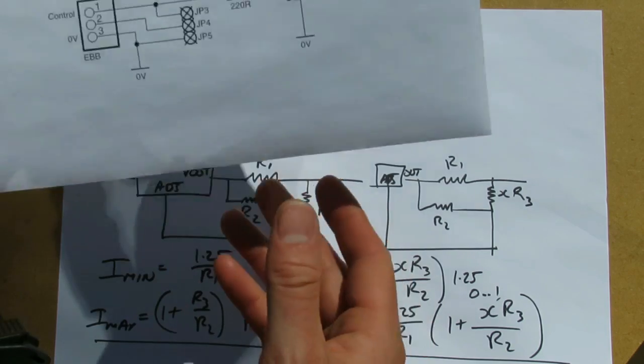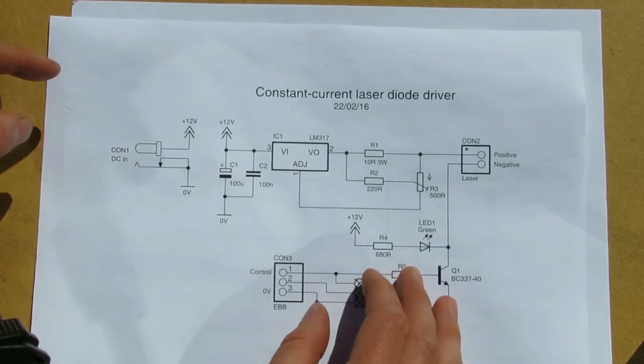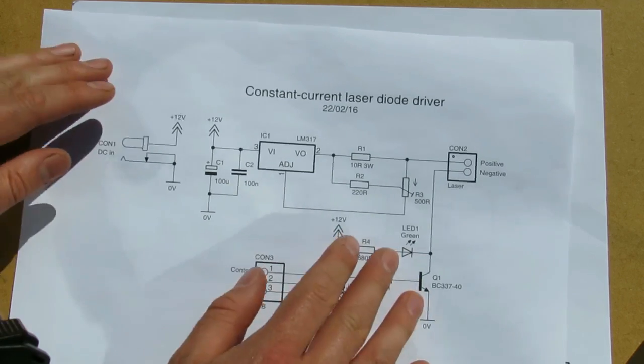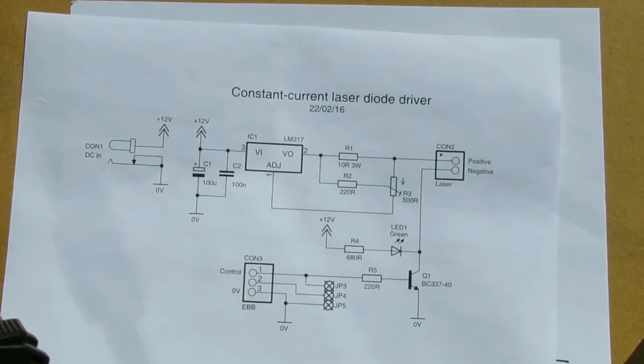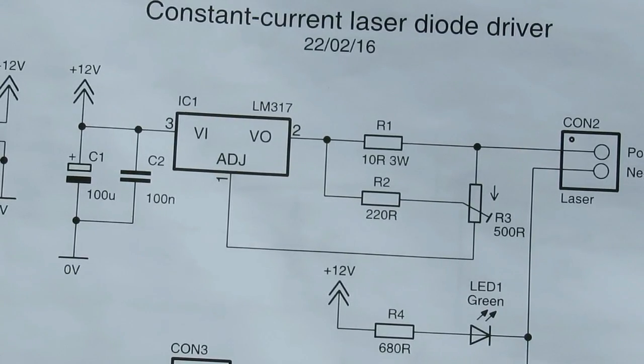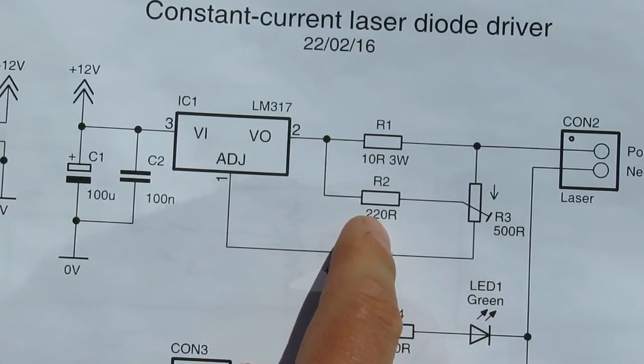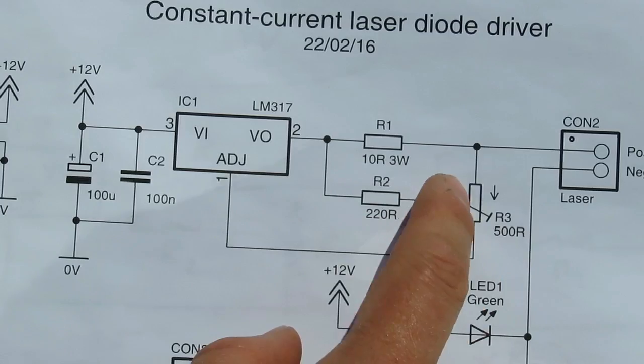In a practical application, such as a laser diode driver, let me zoom in a little so you can see the values here. We've got a 10 ohm series resistor and a 220 plus 500 ohm potentiometer.